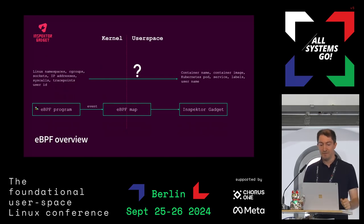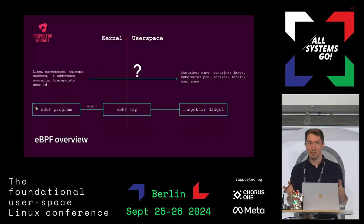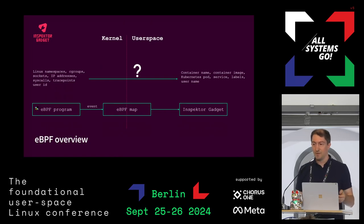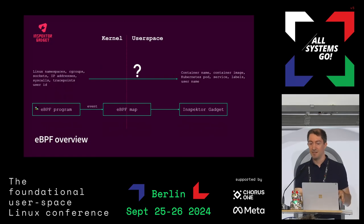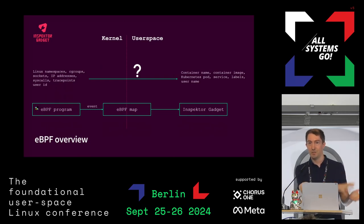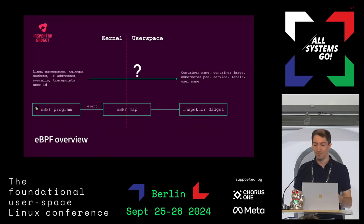We talk about eBPF here. eBPF is something that runs in the Linux kernel and it deals with low-level things like Linux namespaces, cgroups, sockets, IP addresses, and so on. But in the end, what the user cares about is not necessarily those things, but higher-level context like container names, Kubernetes labels, and these things. How do we translate from one world to another? That is where Inspector Gadget is helpful.